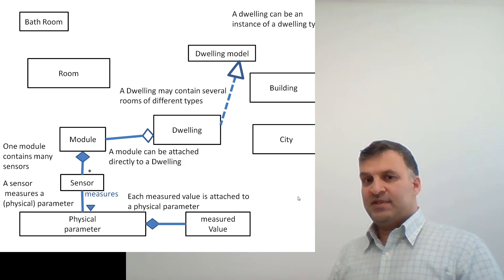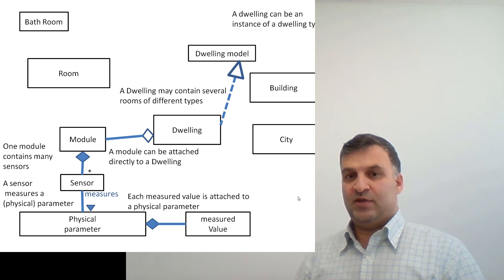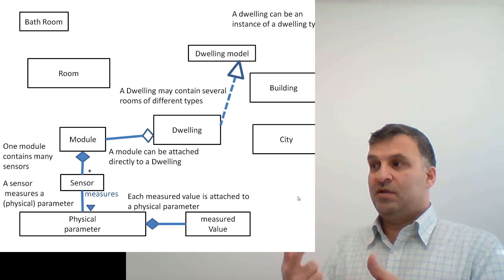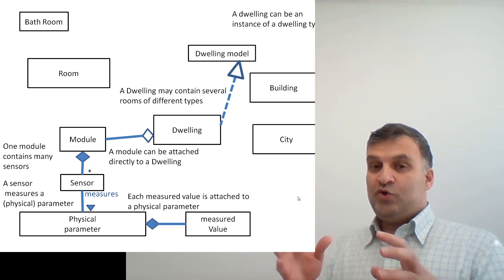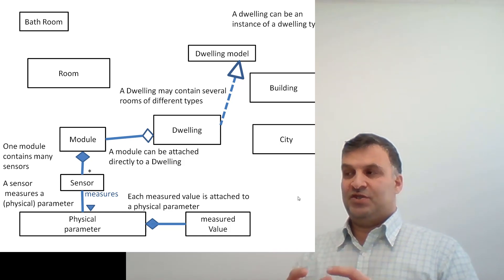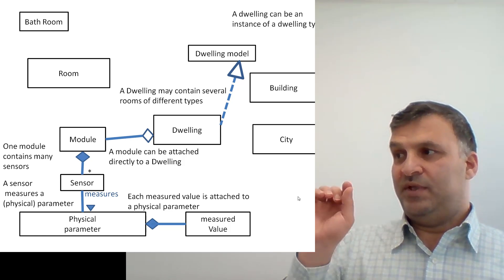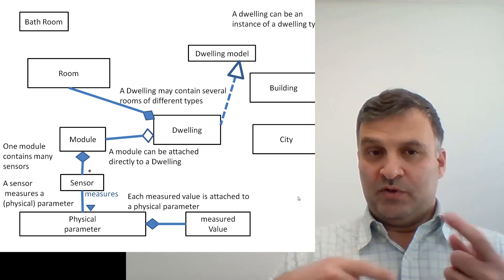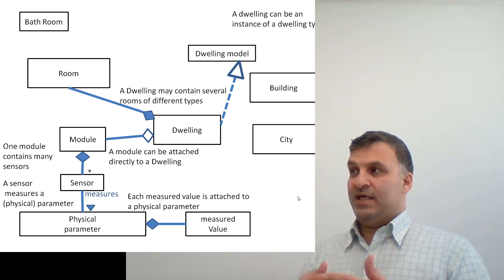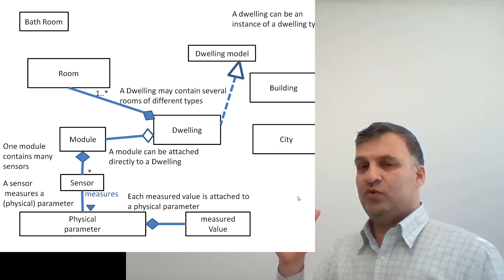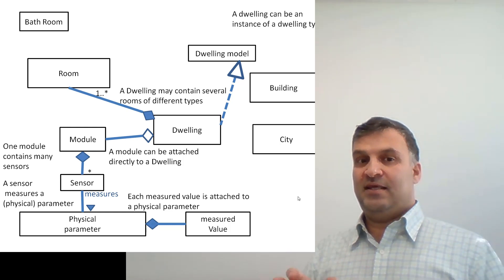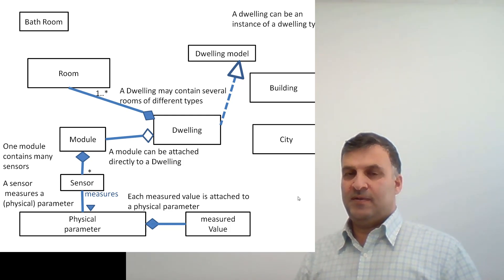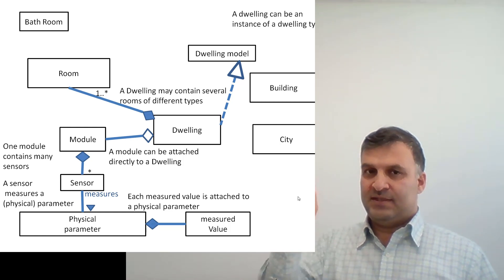A dwelling may contain several rooms of different types. A dwelling contains several rooms and rooms are parts of the dwelling. The relationship is either composition or aggregation, but usually we don't separate rooms from a dwelling — it is a fixed relationship, so it is composition, represented with a filled diamond. If we want to use numbers, because we said several rooms, we can add one-two-star multiplicity. If we know the system has at least two or three parts, we can specify the number of rooms; if we don't know the exact numbers, it is not necessary to use multiplicity.